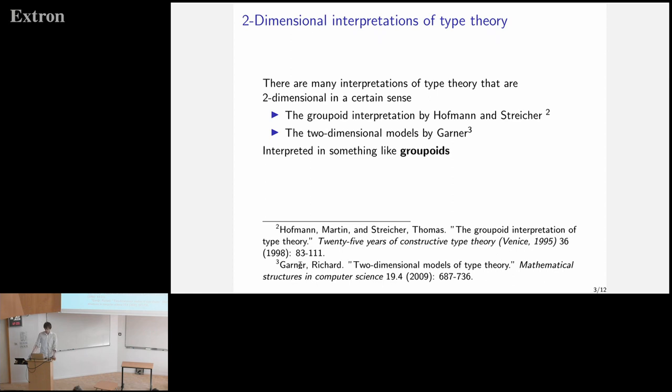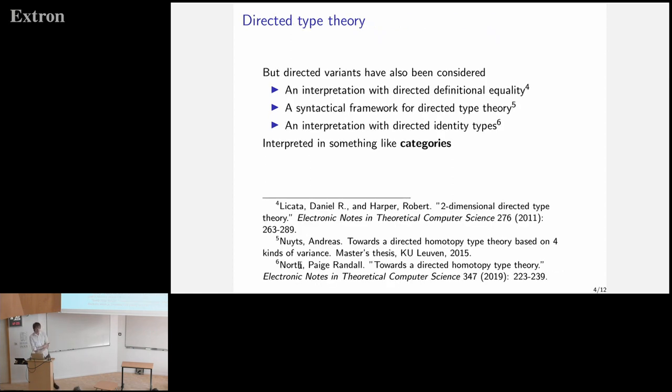Stuff like this has been generalized by Richard Garner to a more general setting. But more people have been working on stuff like this. And I will highlight the people in the audience, which are Andreas Nuyts and Paige Nord. And they've been working on a directed version of stuff in the previous slide, like a directed version of the groupoid model. And these are basically the first models of a directed type theory, or the first syntactic frameworks for a directed type theory. And if you look at this kind of stuff, then you see that it's interpreted not in something like groupoids, but like categories in which the whole notion of direction becomes more crucial.